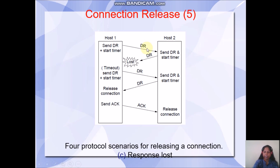Another case is where the disconnect request reply from host2 is lost. This must be dealt with differently. Host1 is not aware that host2 is ready to disconnect, so it will again send a disconnect request and wait for the acknowledgement from host2. If the initial disconnect request or acknowledgement is lost, host1 will resend the DR. At this point, host1 releases the connection, and upon receiving the acknowledgement, host2 releases the connection.